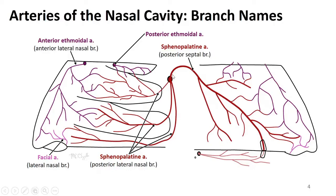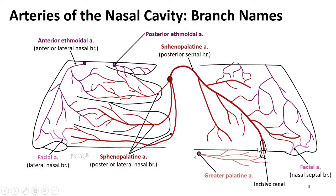On the septum, the branch of sphenopalatine is called the posterior septal branches — similar to how we saw posterior lateral nasal on the lateral wall, on the septum we call them septal. The greater palatine artery anastomoses with those posterior septal branches, communicating through the incisive canal. The branch of the superior labial and facial artery is called the nasal septal branch, and we see anterior septal branches from the anterior ethmoidal artery. Everything on the lateral wall is typically a lateral nasal branch, and anything on the septal wall is a septal branch.